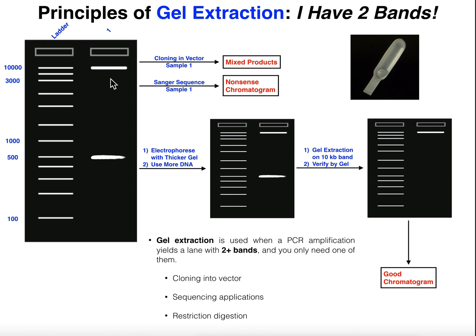So how does a gel extraction work? Let's suppose I just did a PCR amplification and this top gene at 10,000 base pairs is the one that I want. This other one down here is just an artifact — it was amplified but I don't want it. I only want the top one. So what I need to do is isolate this top band and get rid of the other one, and a gel extraction accomplishes that. They're actually pretty good, pretty efficient techniques. So what I'm going to do is make a thicker gel for the gel extraction.